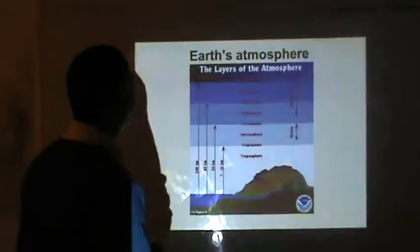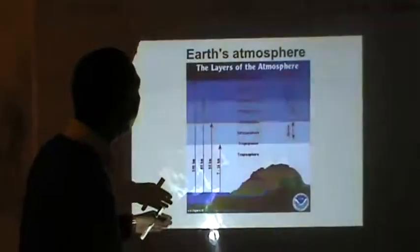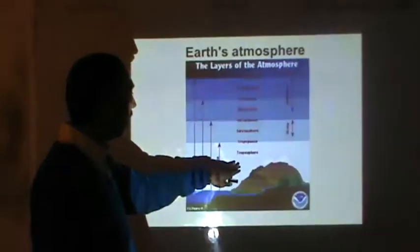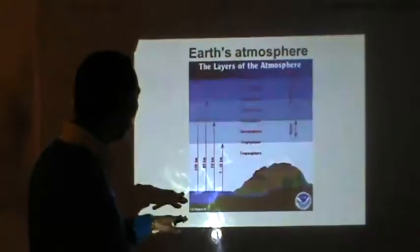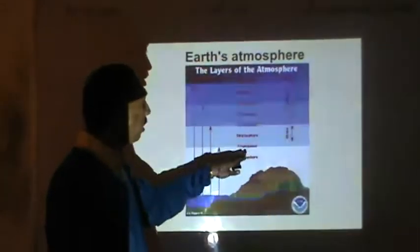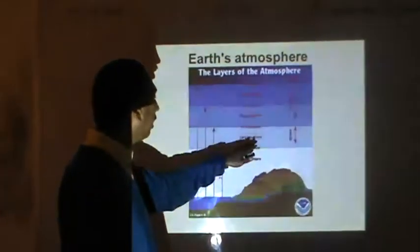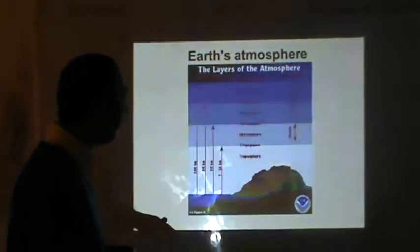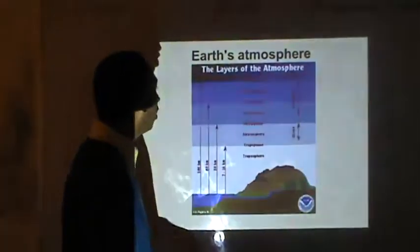Now see the earth's atmosphere. Up to 7 to 16 km, this layer is known as the troposphere. Above this is the tropopause, and when we move up to 50 km above the earth's surface, there is another region known as the stratosphere, and in this region the maximum concentration of ozone is found.